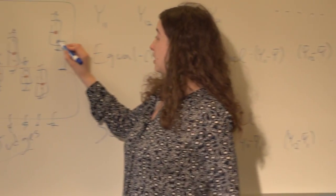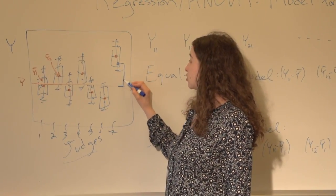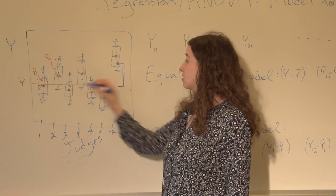For this data point here, for example, which is in the seventh group, we can see the residual for the equal-means model is the vertical distance between this point and this overall mean, this line.